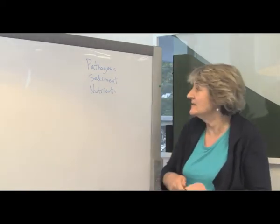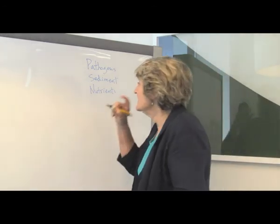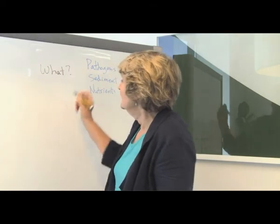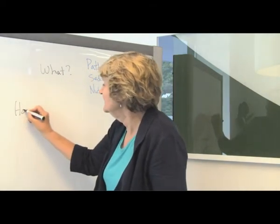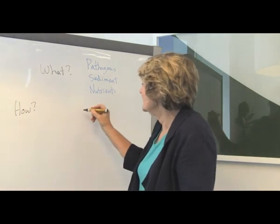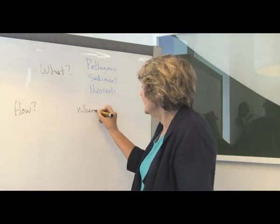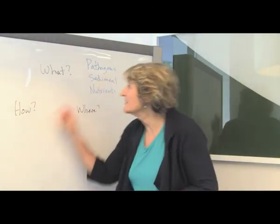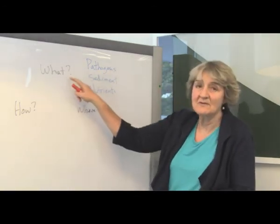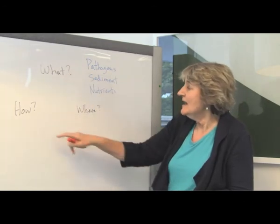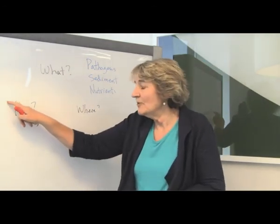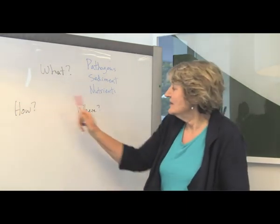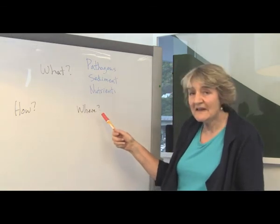It's quite a simple model where we start with a question: what? We follow that with a question: how? And then a question: where? The 'what' question is: what are the pollutants we're talking about — pathogen, sediment, nutrients — to identify those? The 'how' question is: how do they get into water? Not only where they come from, but what is the means by which they travel there? And 'where' is where they get in.